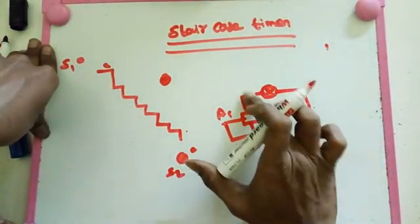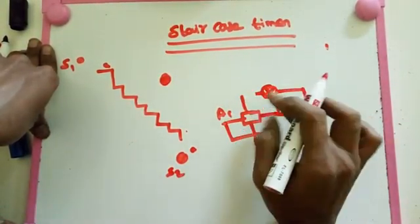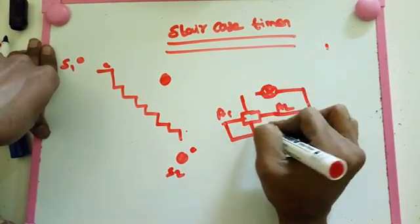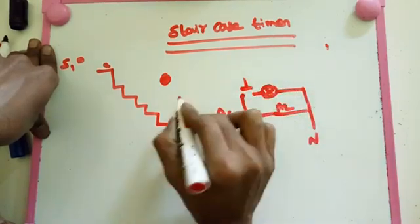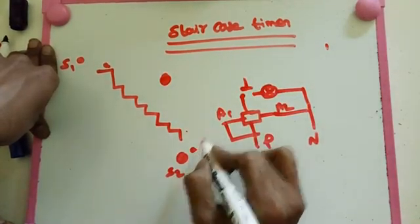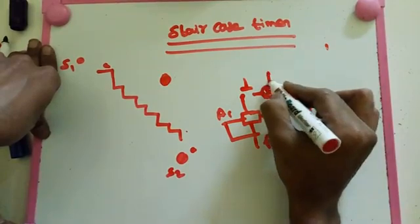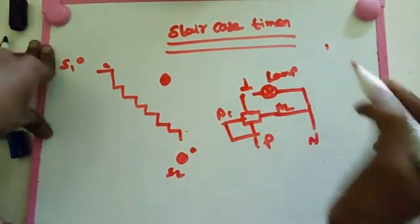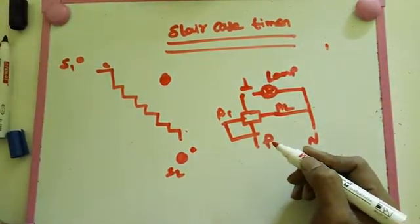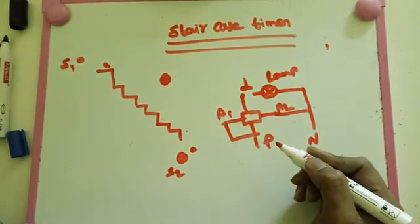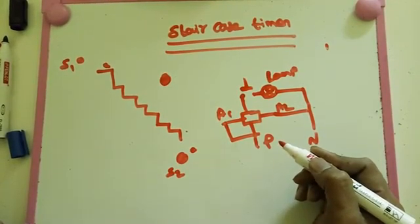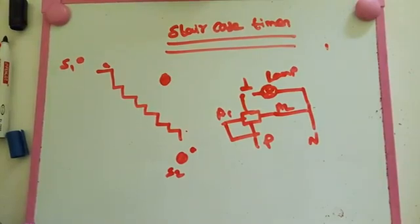So here we make latching relays N.O. points. This switch will be available here. So we push this switch, that time the lamp will glow for few seconds, for whatever we set. That second the lamp glowed. Now we are going to see real time staircase timer.